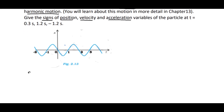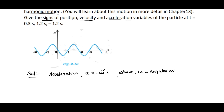The particle which is in simple harmonic motion will have the acceleration given by: a is equal to minus omega squared x, where x is the position or displacement, omega is the angular frequency, and a is the acceleration.